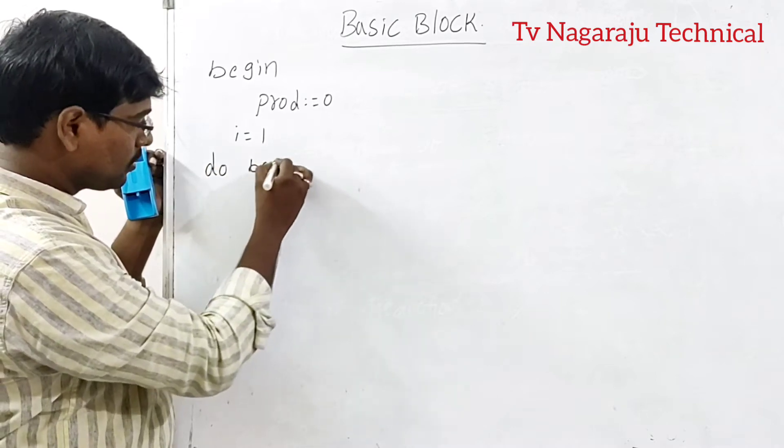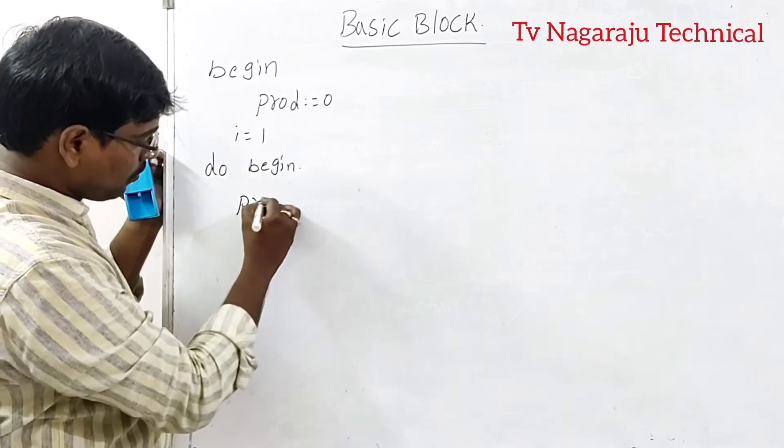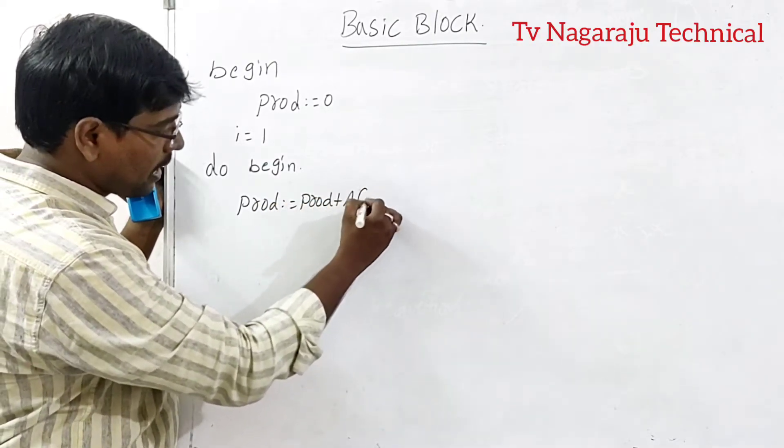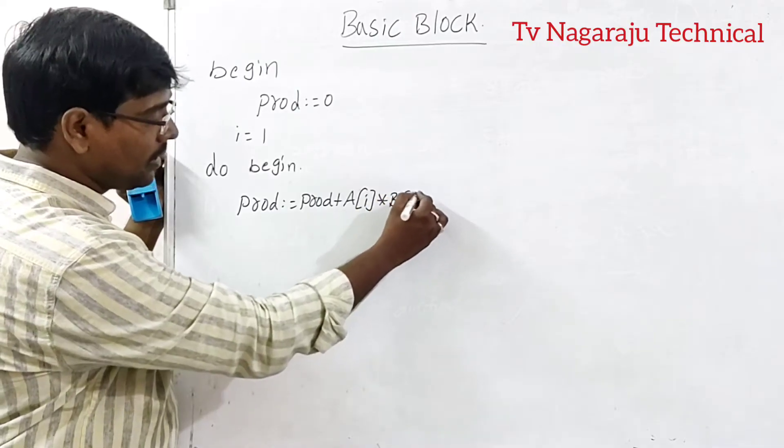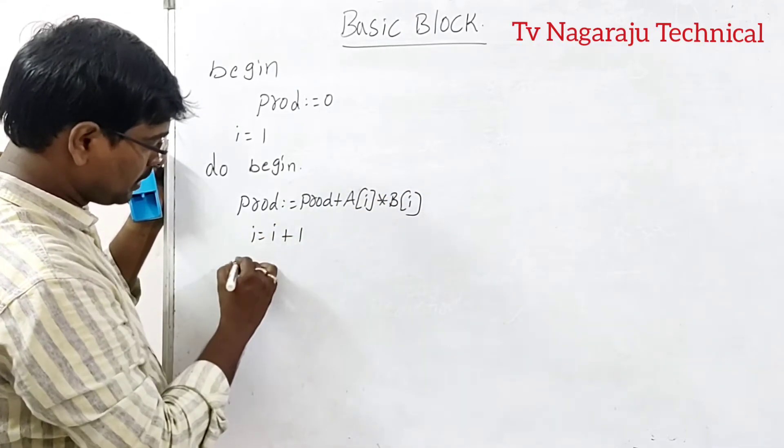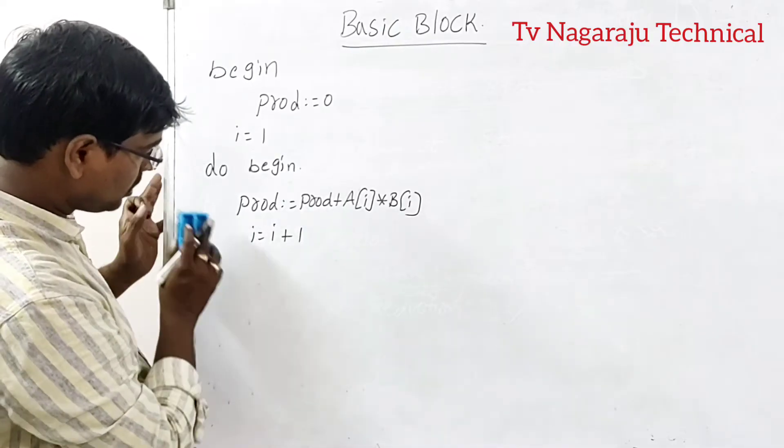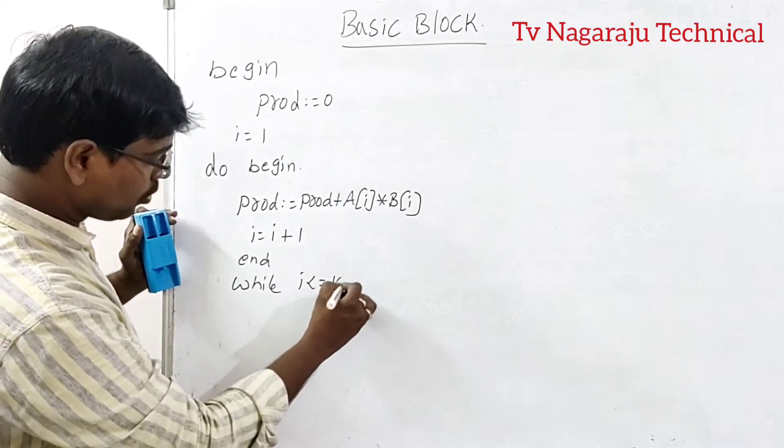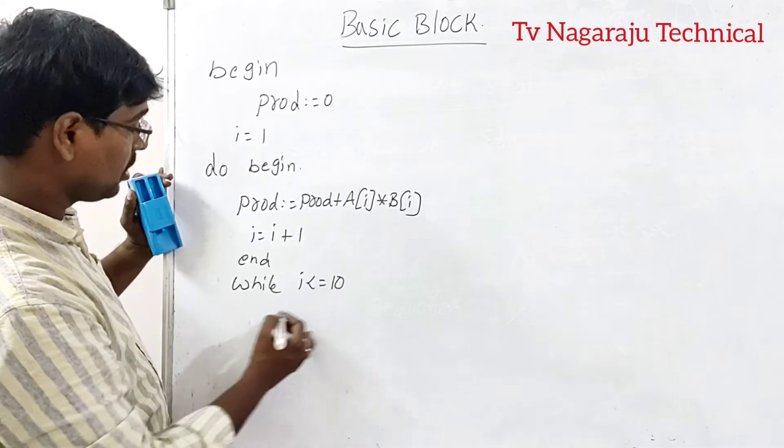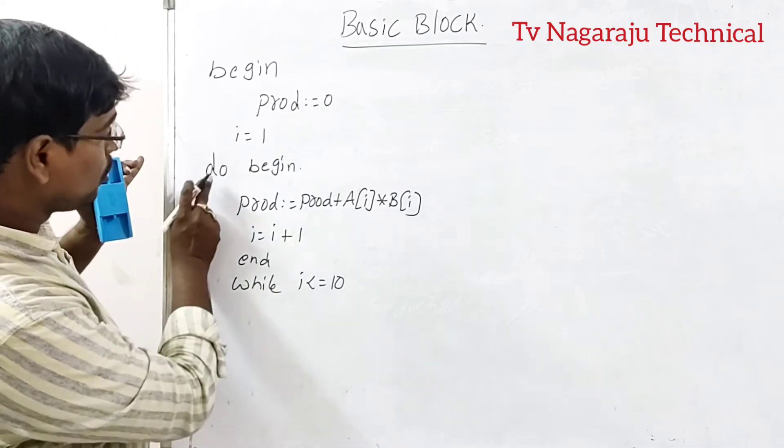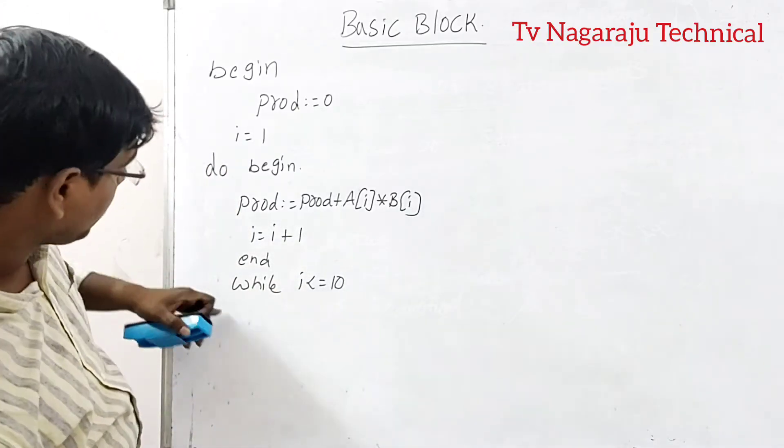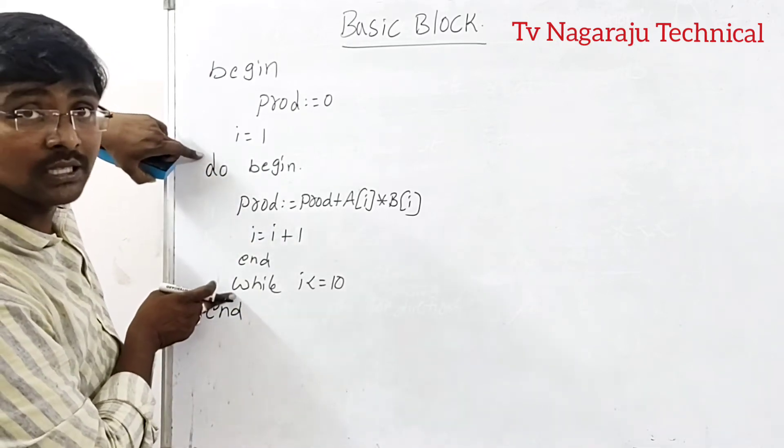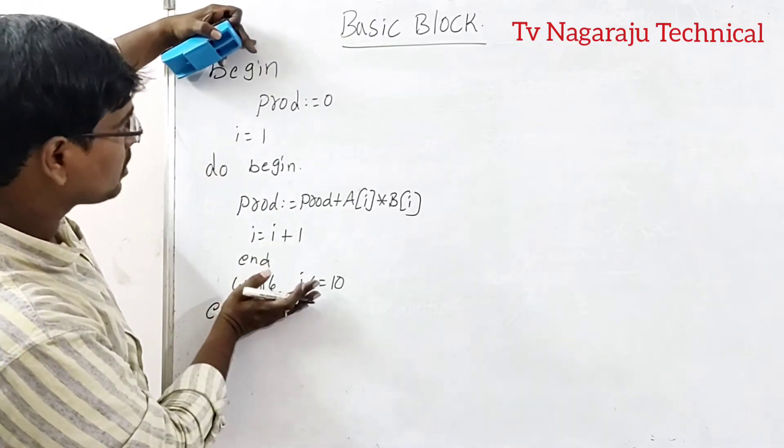And then we are performing the dot product. Do begin: product is equal to product plus A of i into B of i. I is equal to i plus 1. This statement is ended. Finally, while i less than or equal to 10. We are going to this statement end. This is a do while loop.